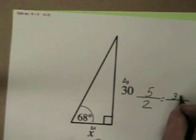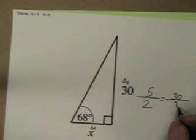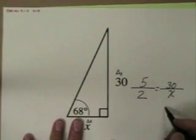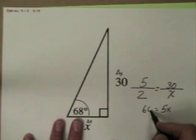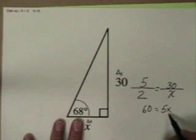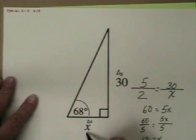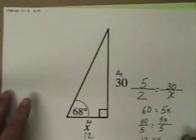Cross multiply and solve: 5x equals 60. We've got an extra step because we're not down to x yet. 5x divided by 60 divided by 5.